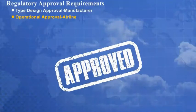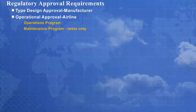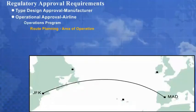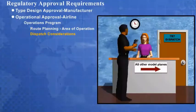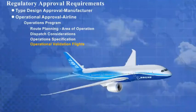To obtain operational approval, the airline must show that it has operational and maintenance programs which address ETOPS requirements. This includes additional training for flight crews and maintenance personnel. The airline ETOPS operations program must include route planning, dispatch considerations, and an operations specification authorizing ETOPS. One or more operational validation flights may also be required to obtain regulatory approval.